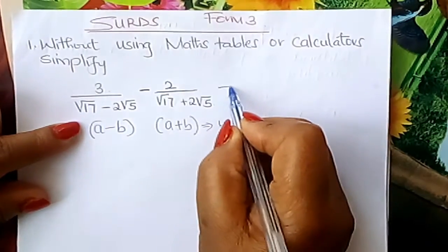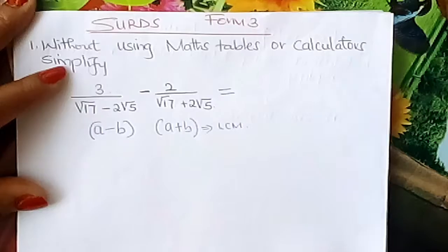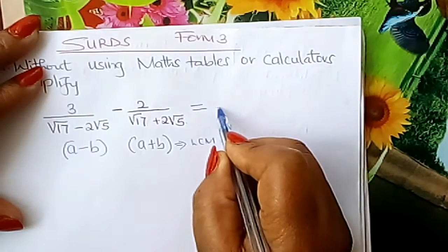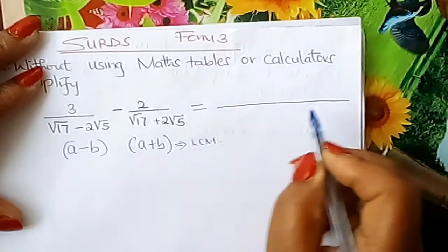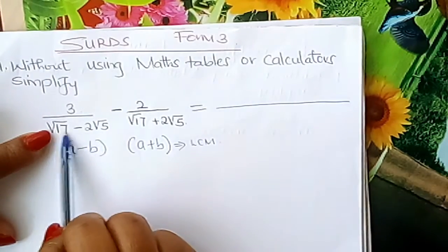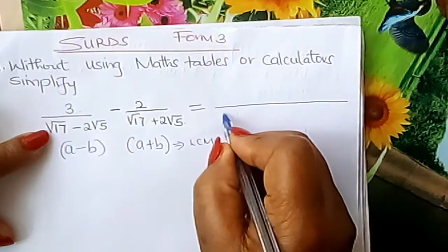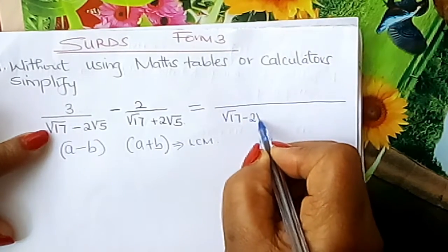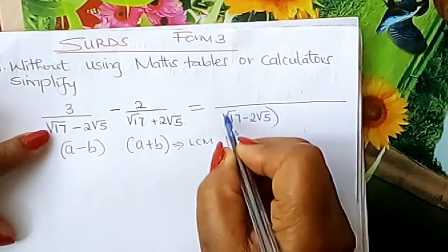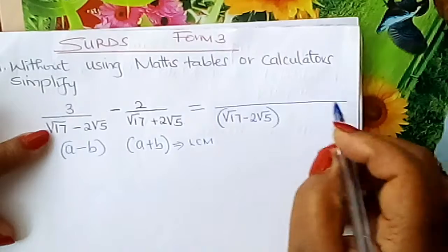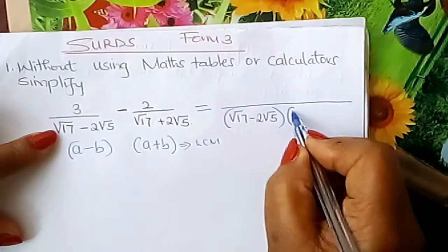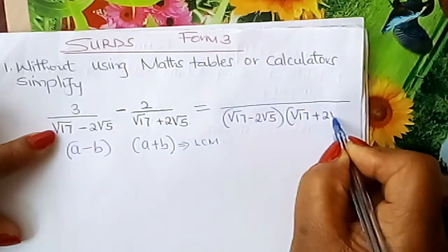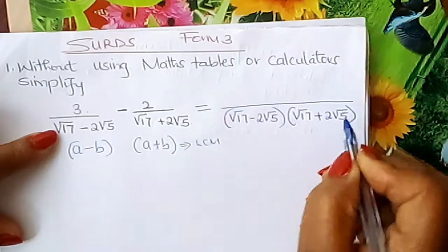So you put equal to, and you come and get your LCM. The LCM is just this multiplied by this, so you write (root 17 minus 2 root 5) times (root 17 plus 2 root 5).